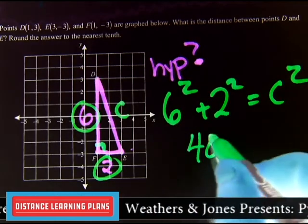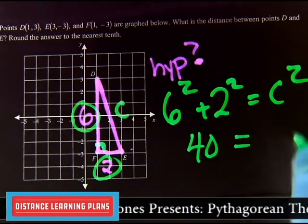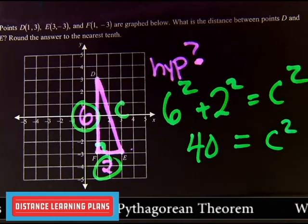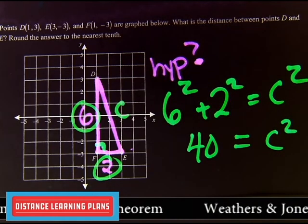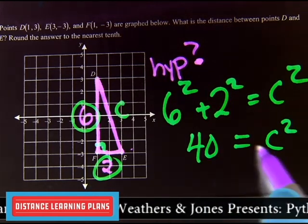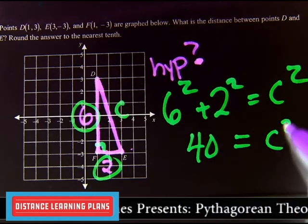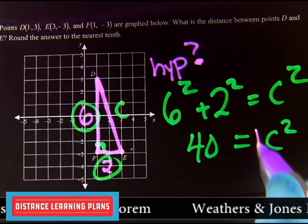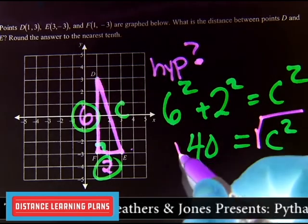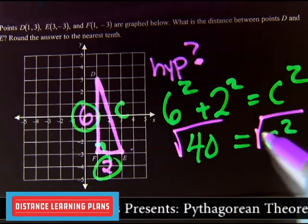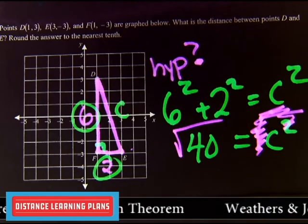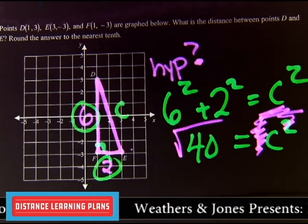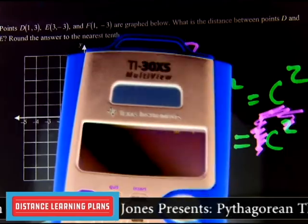Could you do that with the calculator? Of course you could. But try as much as you can and not have to use it. Alright, then here, the answer is not 40, because you have C squared. Remember, you've got to always finish by unsquaring this letter with the opposite of squaring, which is square rooting.